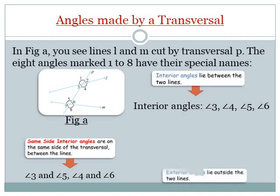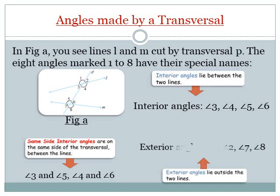Now, exterior angles lie outside the two lines. The angles formed outside these two lines — from the figure, four exterior angles are formed: angle 1, angle 2, angle 7 and angle 8. These four angles are the exterior angles.